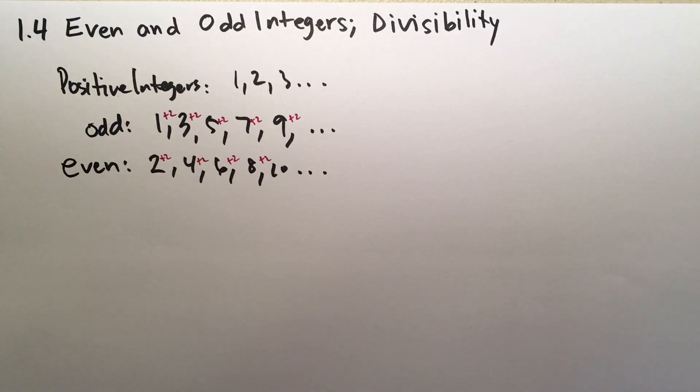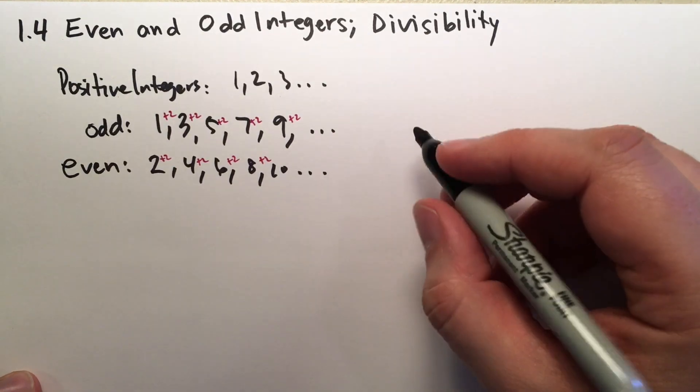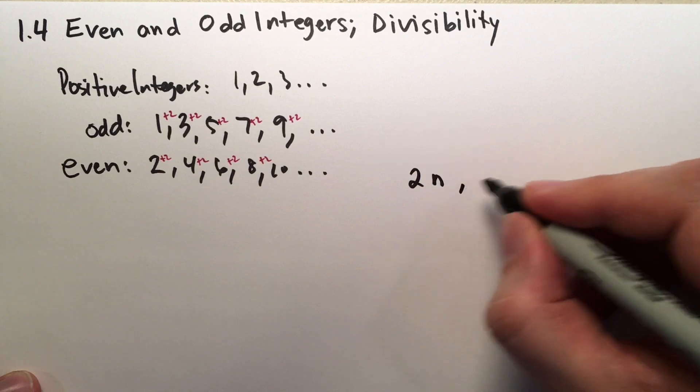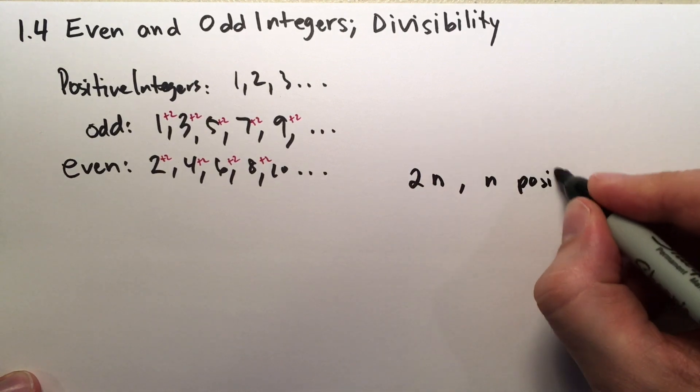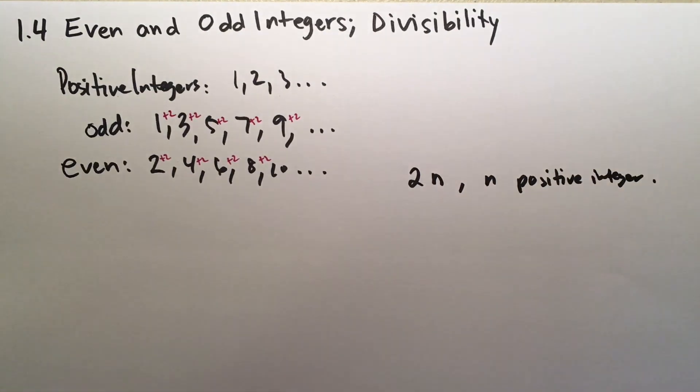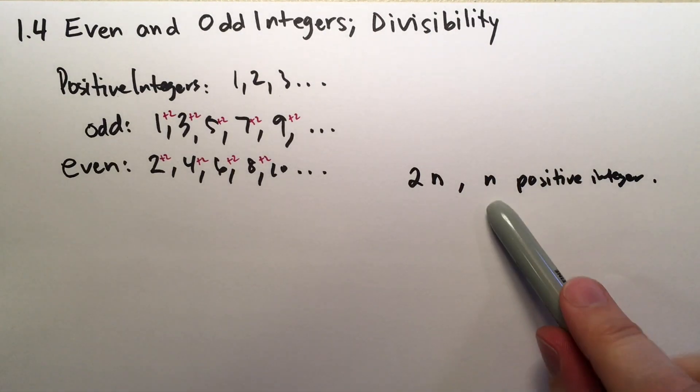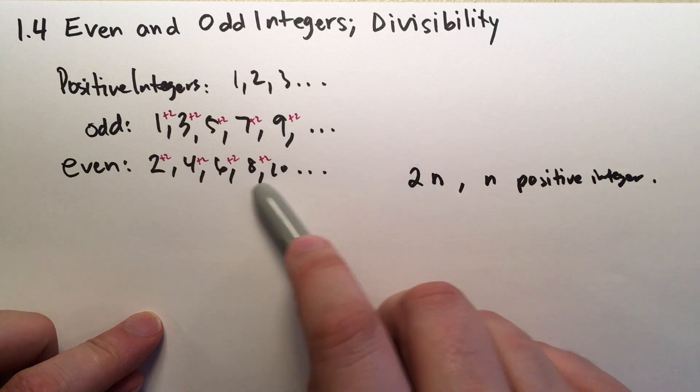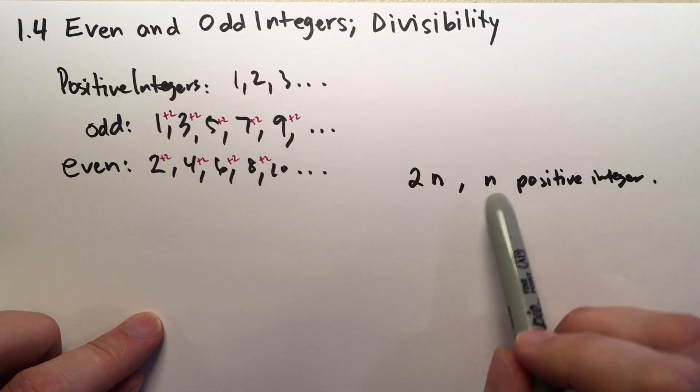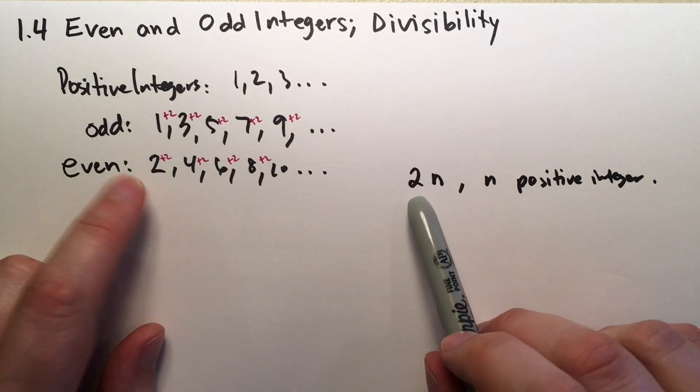Now we can rewrite even integers in the form of 2 times some positive integer. So for instance, if we chose 7, 2 times 7 is 14, and that would be one of the even integers. If we chose 1, 1 times 2 is 2, and that's definitely one of the even integers.